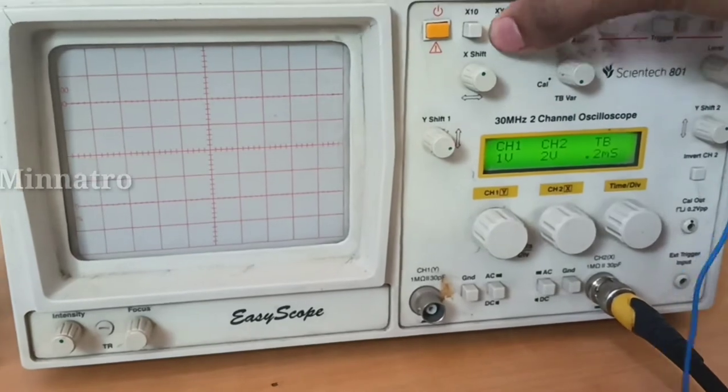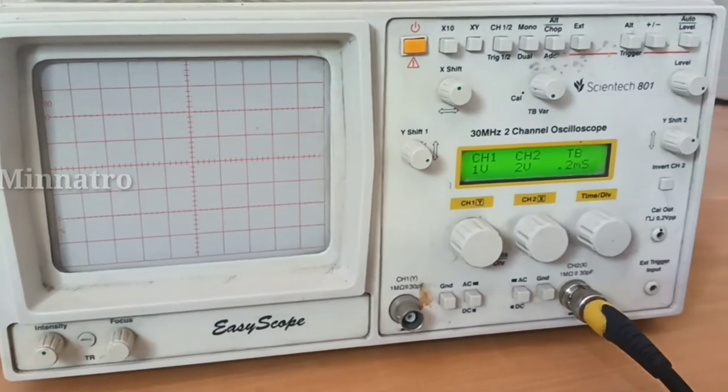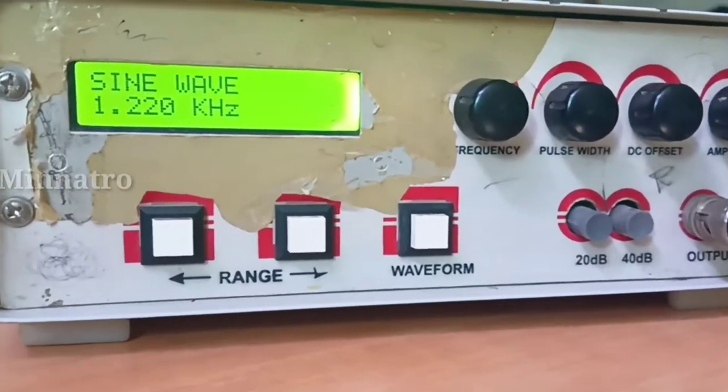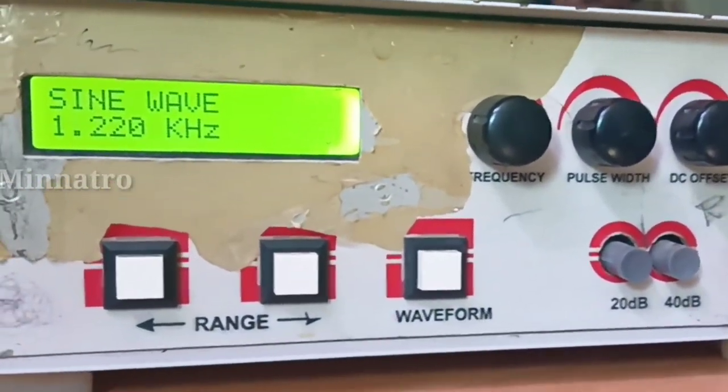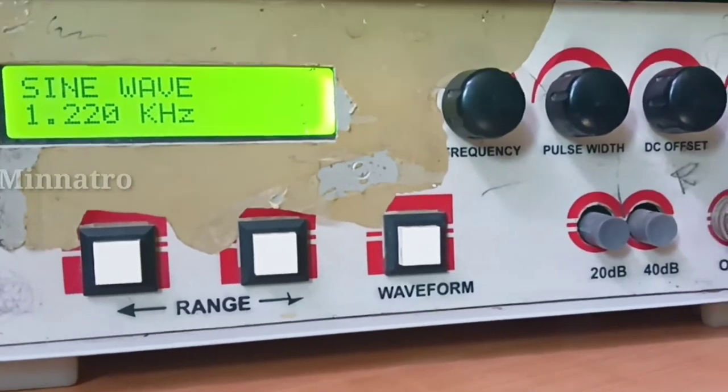As we select the function generator, we want to select the sine wave. We will select the sine wave. If we select the sine wave, I will select the 1.200 kilohertz. Now let's download the function generator.